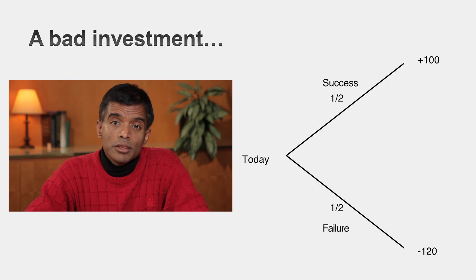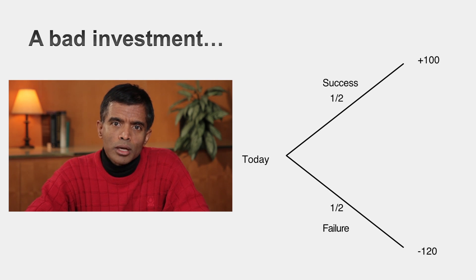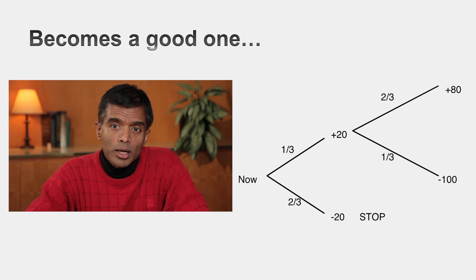To give you an idea of where the value of an option comes from, let me give you a very simple illustration. Let's assume you have an investment where there's a 50% chance you could make $100 million, and a 50% chance you could lose $120 million. The expected value of this investment is negative — you would not take this investment. Now let's say I took the same investment and broke it down into two steps. In the initial step, you get one of two outcomes: either the investment comes back as good, in which case you make $20 million, or it comes back as bad, in which case you lose $20 million.